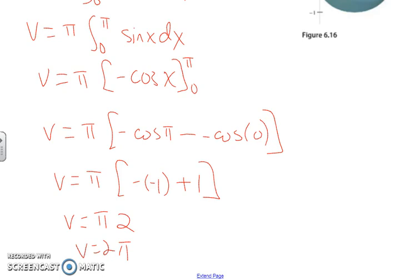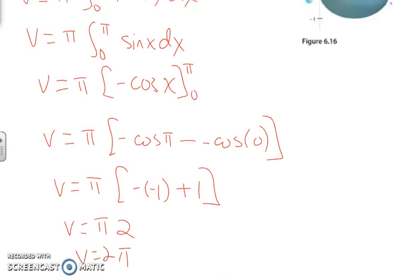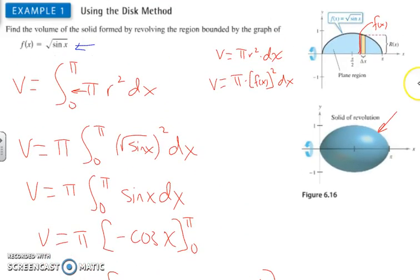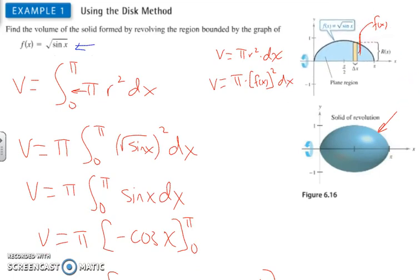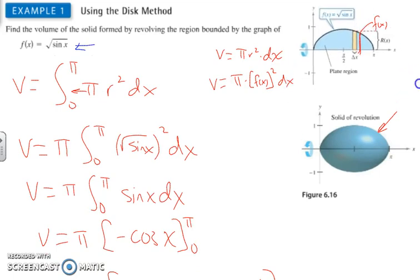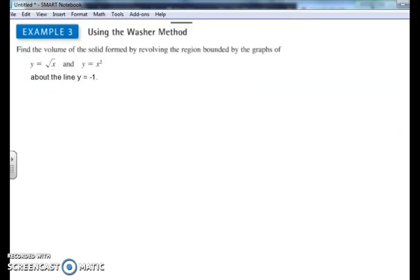So 2 pi is the volume of revolution of this function around the x-axis from 0 to pi. Now let's take a look at the washer method, and when a hole would be created in our disk.